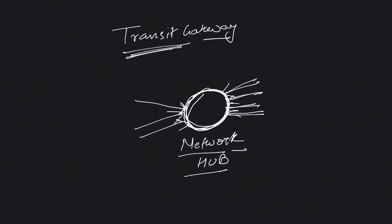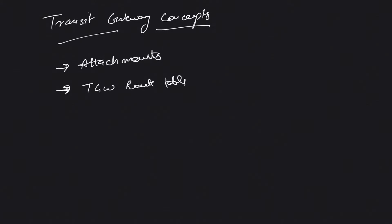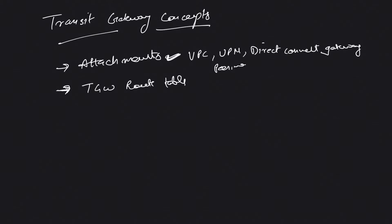When we talk about Transit Gateway, the most important concept is attachments — what kind of attachments does a Transit Gateway allow. If you go to the AWS documentation, you will see that you can have VPCs, VPN connections, Direct Connect gateways, and peering connections. These are the kinds of attachments that Transit Gateway supports.